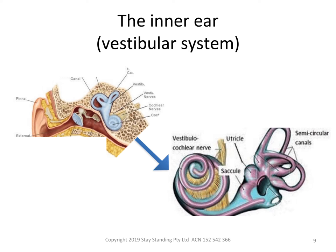The utricle and saccule detect movement with respect to gravity and motion, and I just want to emphasize that gravity is a key ingredient in this sensory system. There are usually two sets of these organs working at once, one on each side of our head. When they work properly, the information they send to the brain is symmetrical. Issues with balance happen when the brain receives mixed or incorrect messages, and this can lead to the sensation of vertigo or dizziness, although dizziness can be caused by other issues not related to the inner ear as well.